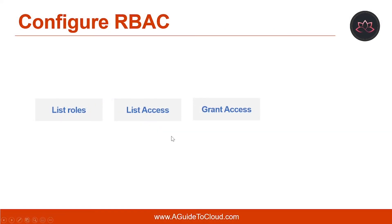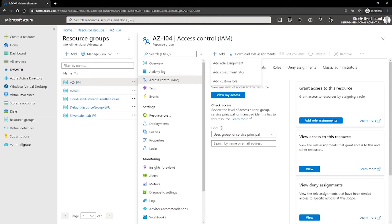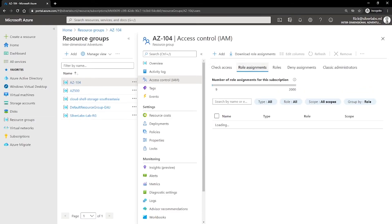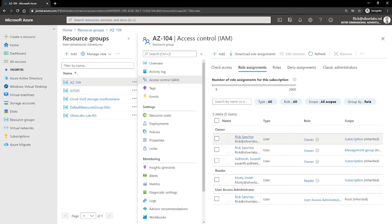The next way to configure is to remove access. Just like how you add access, removing access works the same way. You go to a resource group, go to Role Assignments, select a user, and remove the access for that user from there.